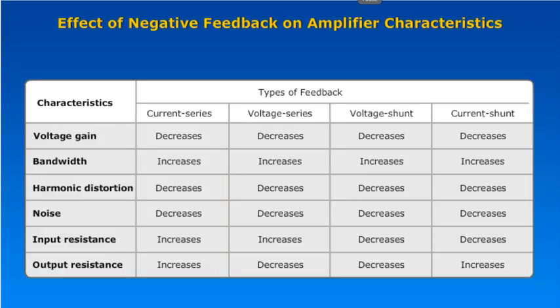Now see the characteristics of your negative feedback amplifier and how these characteristics vary across the four types. The voltage gain decreases for current series, voltage series, voltage shunt, and current shunt — all types decrease the voltage gain. The bandwidth of the negative feedback amplifiers increases.